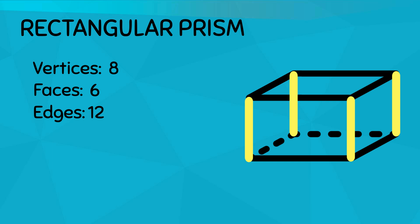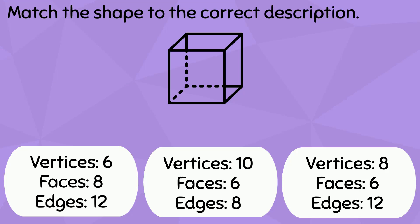To make sure we get the hang of this, let's do more practice by matching these shapes to the correct description. A cube has eight vertices, six faces, and 12 edges. All of its faces are squares.